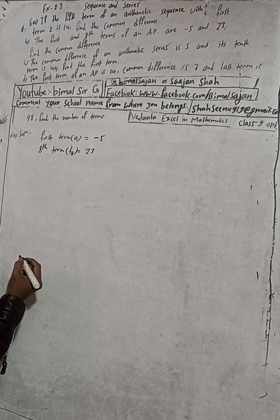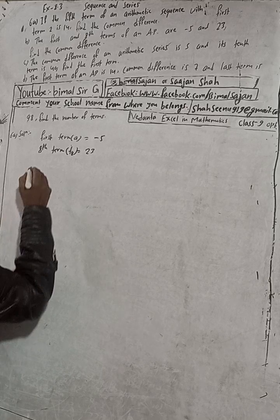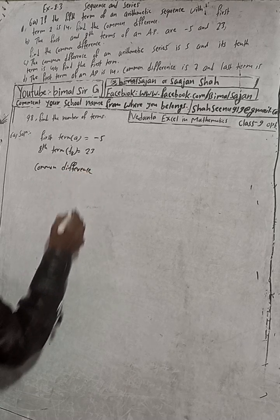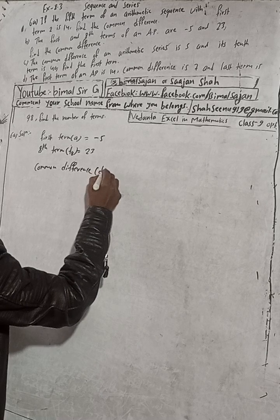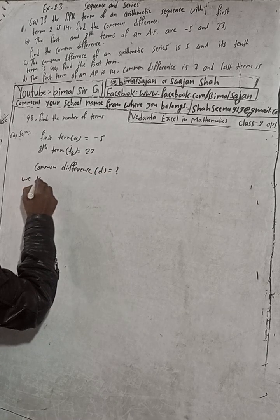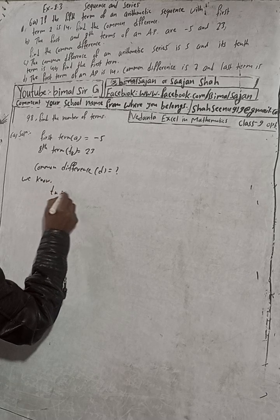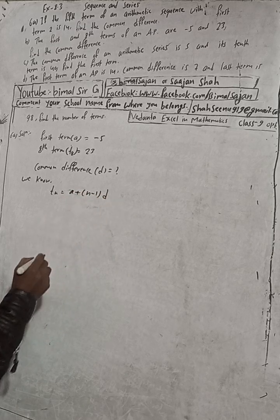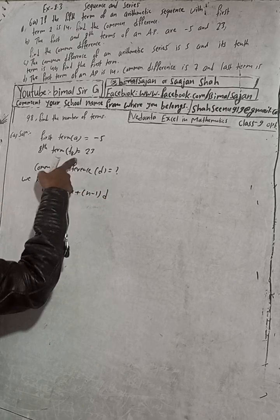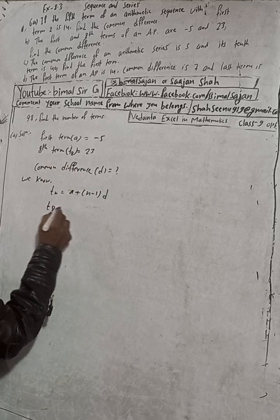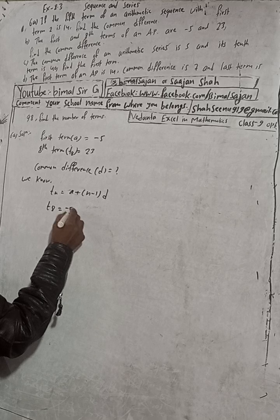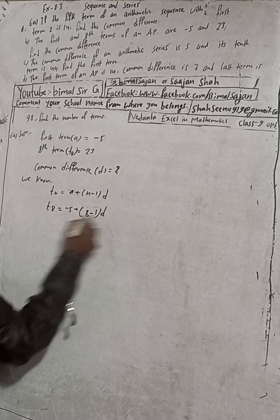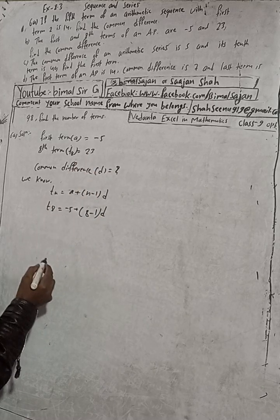We need to find the common difference D. Using the formula Tₙ = a + (n−1)·D, for T₈: substitute a = −5 and n = 8, giving T₈ = −5 + (8−1)·D. Since T₈ = 23, we write: 23 = −5 + 7D.